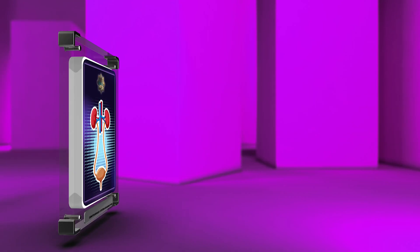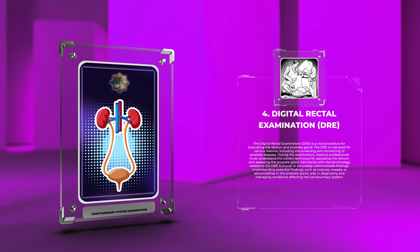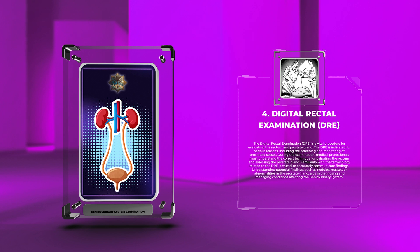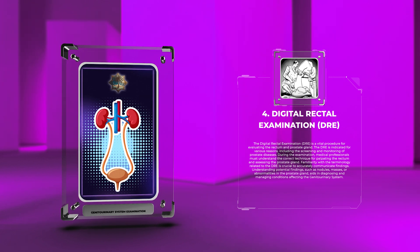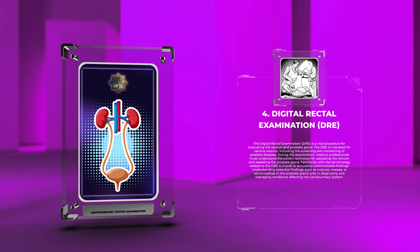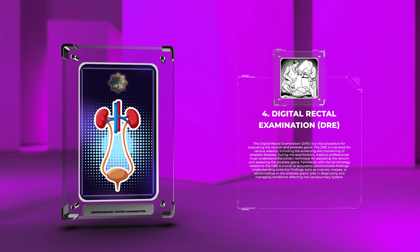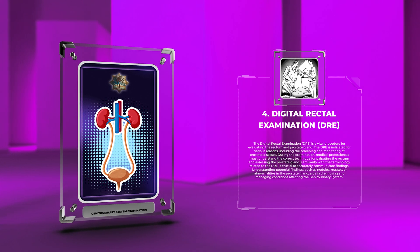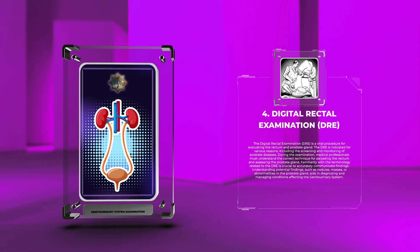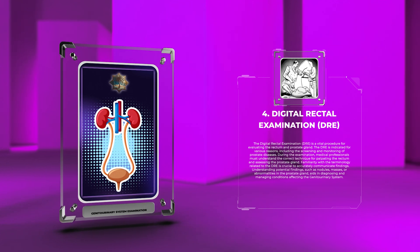The digital rectal examination, DRE, is a vital procedure for evaluating the rectum and prostate gland. The DRE is indicated for various reasons, including the screening and monitoring of prostate diseases. Medical professionals must understand the correct technique for palpating the rectum and assessing the prostate gland. Familiarity with terminology related to the DRE is crucial to accurately communicate findings, including potential findings such as nodules, masses, or abnormalities in the prostate gland, which aid in diagnosing and managing conditions affecting the genitourinary system.